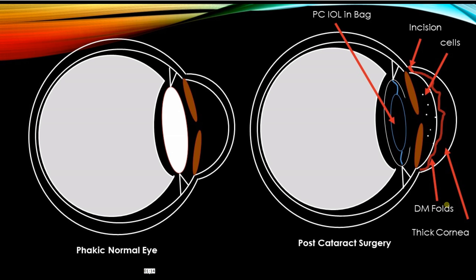Every anterior segment surgery is going to produce that, so you need to look out for anterior chamber cells and flare. It is important to control this inflammation post-operatively, because these cells and proteins — including fibrin — can cause membrane formation on the anterior surface of the IOL or can cause sticking of the iris to the freshly implanted intraocular lens.